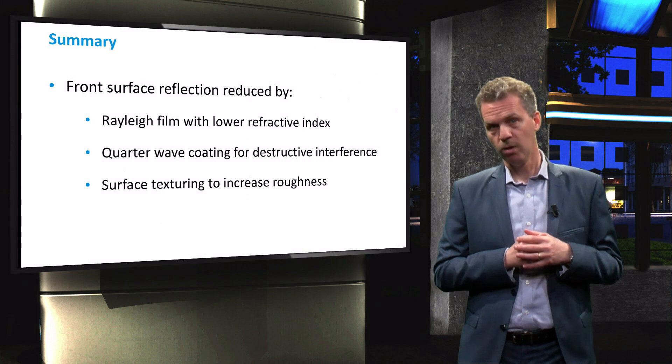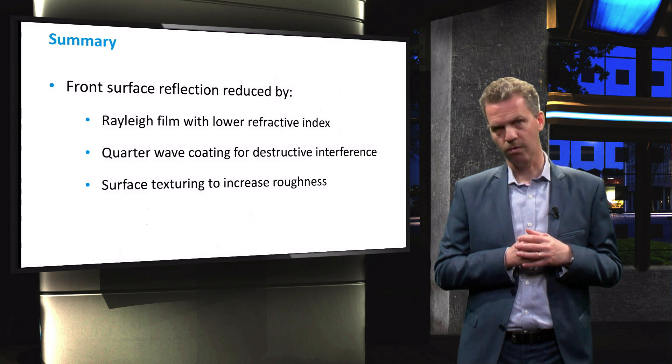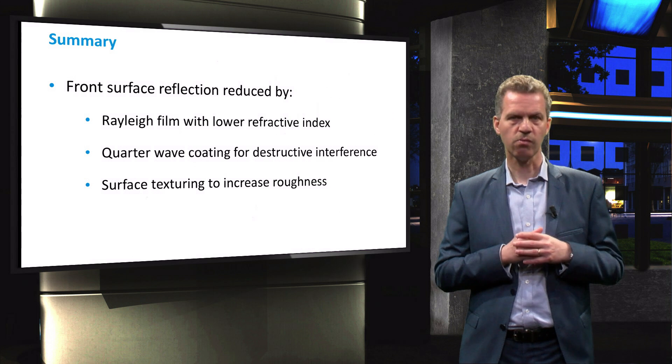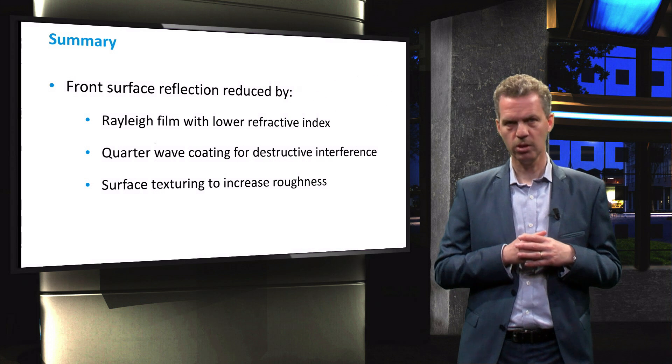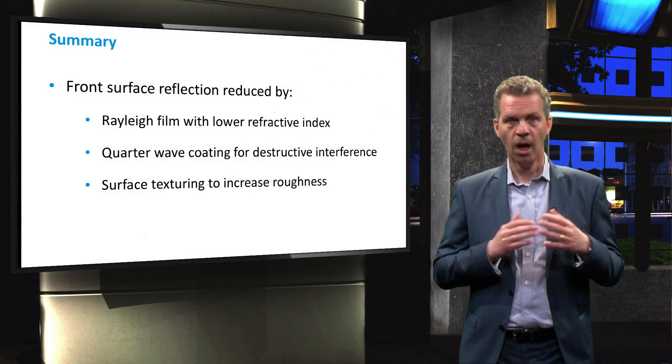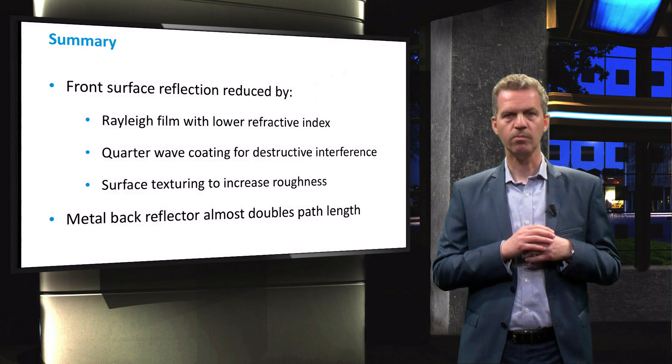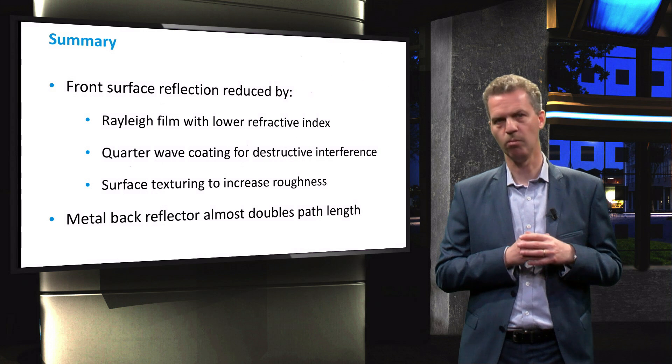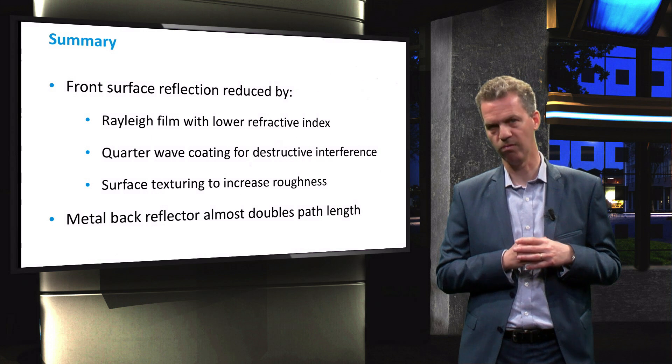To summarise this video, we have shown that aside from the anti-reflective coating discussed in the previous video, the front surface reflection can be further reduced with texturing. This is at the same time a valuable addition to more than doubling the path length of light through the wafer in combination with a metal back reflector.